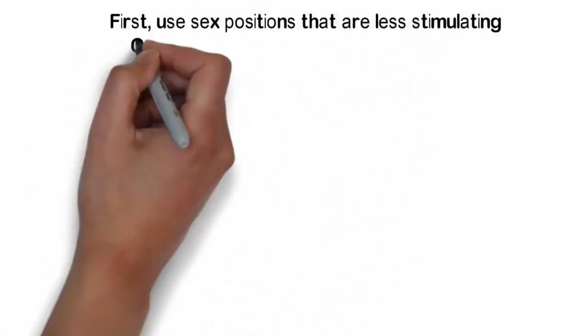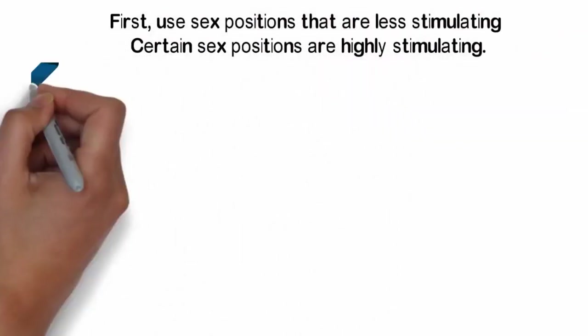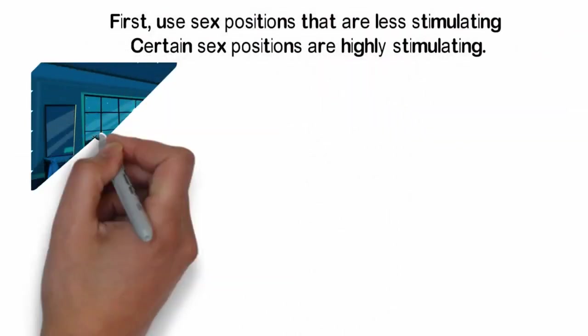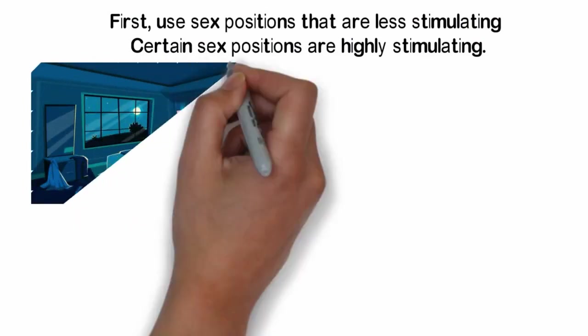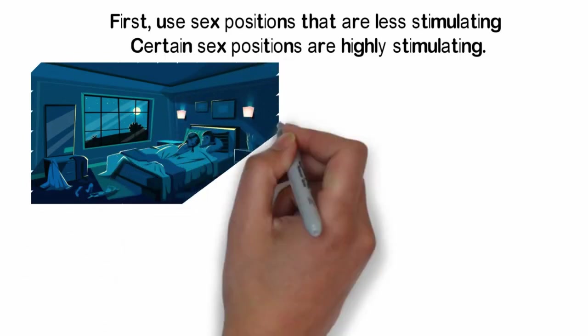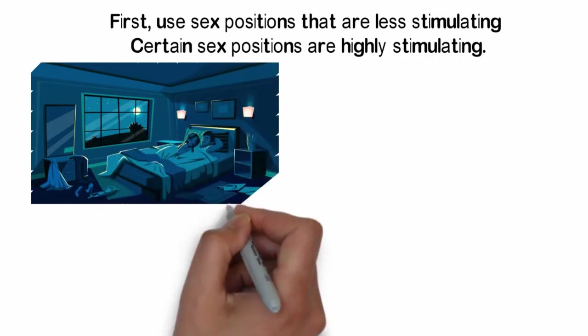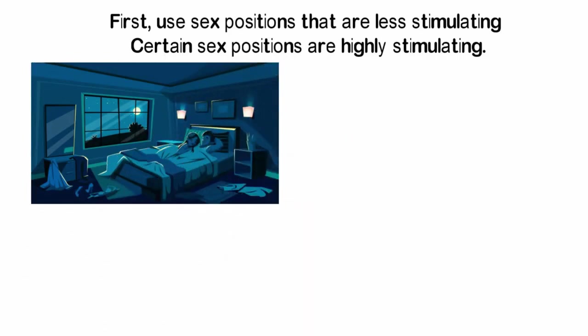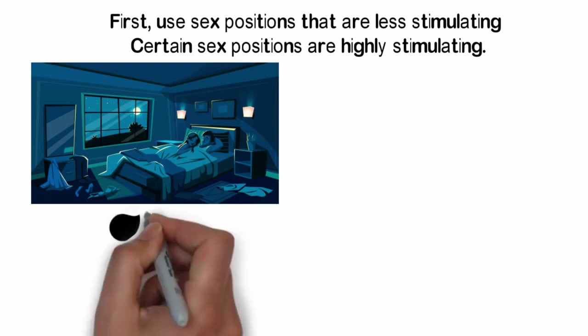First, use sex positions that are less stimulating. Certain sex positions are highly stimulating and will speed up your ejaculation. On the other hand, there are sex positions which are less stimulating and can help you last longer in bed. If you wonder how to last long in bed, avoid the former and adopt the latter as much as you can.